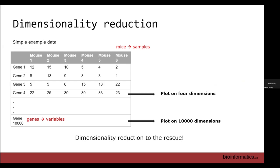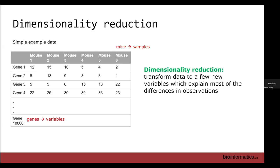Our brains cannot comprehend beyond three dimensions. So if you add four, a hundred, or a thousand genes, you cannot visualize them on a screen or paper. That's why we need dimensionality reduction. As biologists, we know there are about 20,000 expressed genes, and a typical dataset would have 20,000 rows. So we transform the data into a few new variables that explain the most differences in the observations.